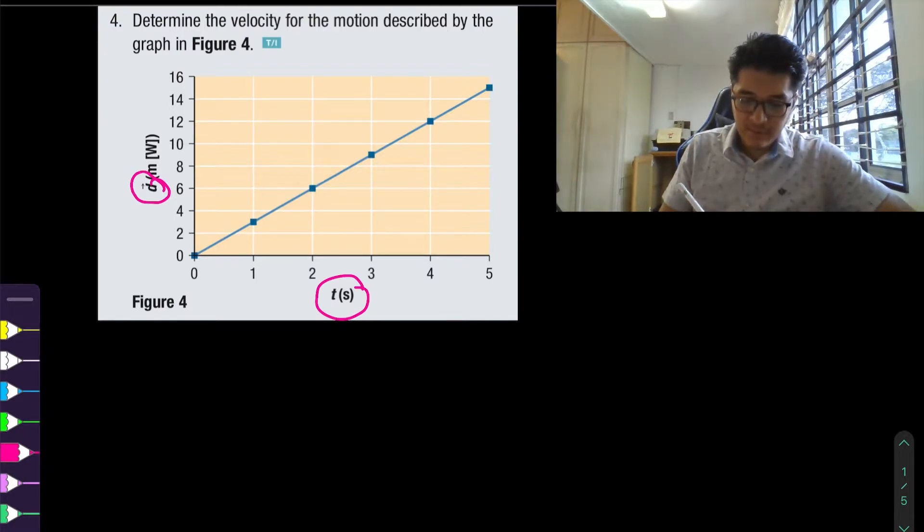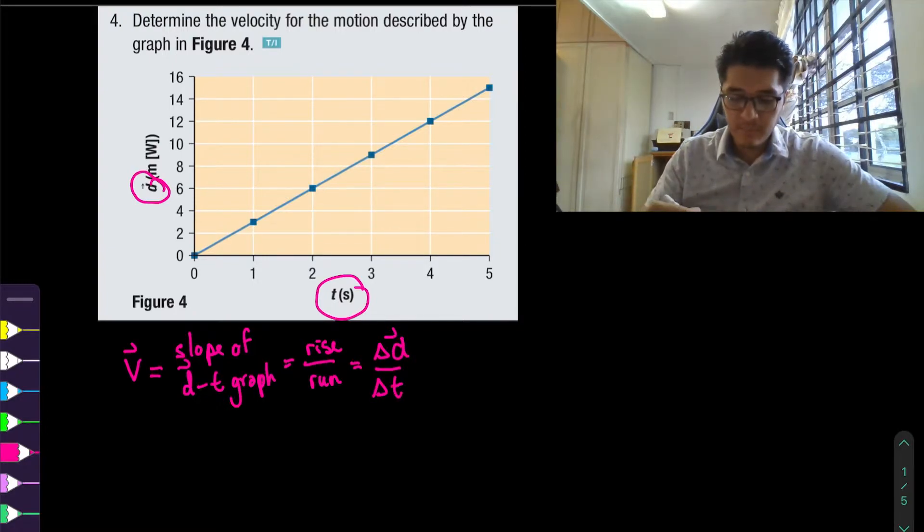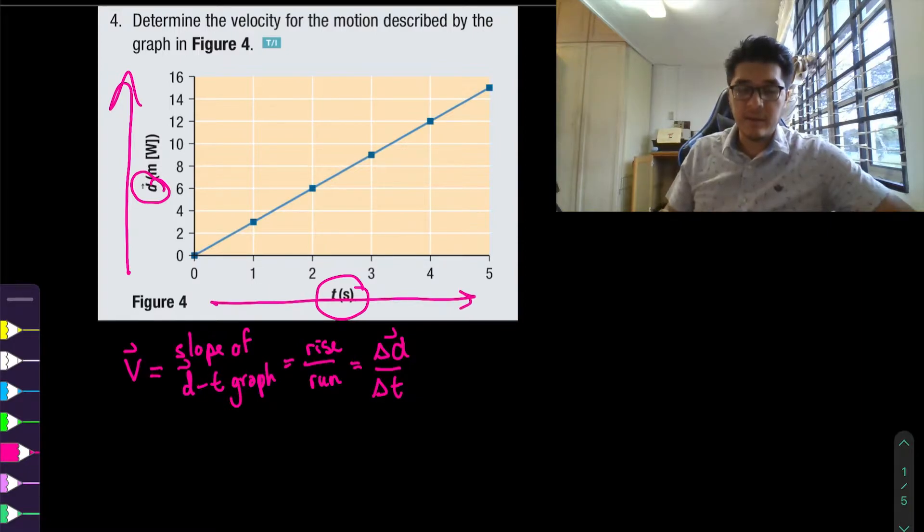So velocity is the slope of the dt graph which means it's going to be the rise over the run and in this case that would be the change in d over the change in t because we have the rise as the position axis and the time or the run on the axis there.